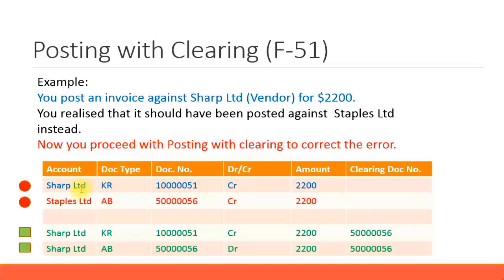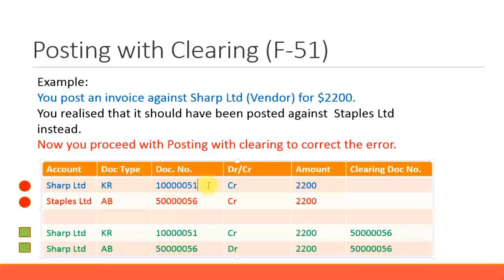When you proceed with posting with clearing, you post against Staples Limited. The clearing document type will be AB, and you credit Staples Limited $2,200. When you do this, you select Sharpe Limited and offset it with a debit amount, which clears that entry. Initially Sharpe Limited's invoice is an open item. Now Staples Limited becomes the new open item. For Sharpe Limited, a new AB document is posted with a debit of $2,200, matching the original credit of $2,200, and that document becomes cleared.